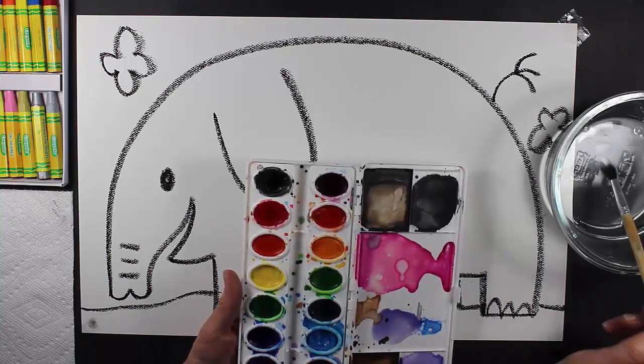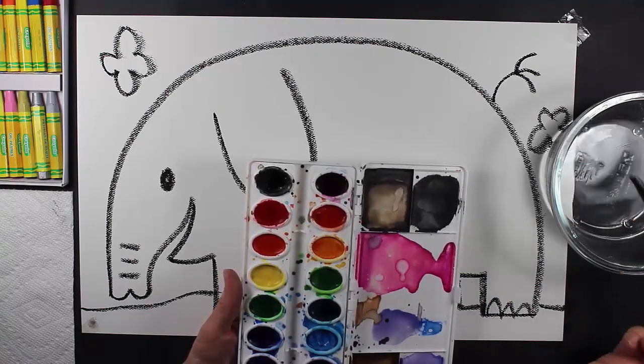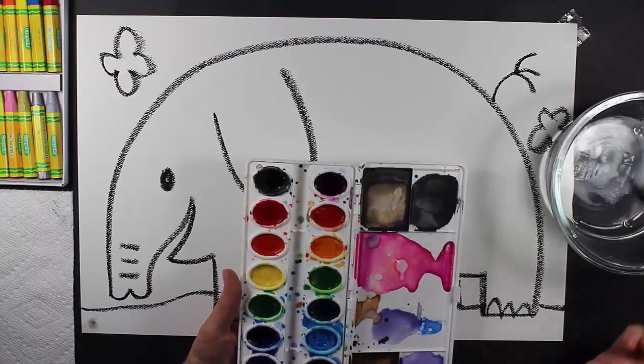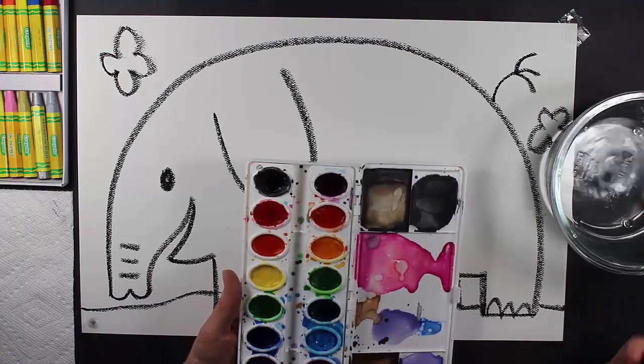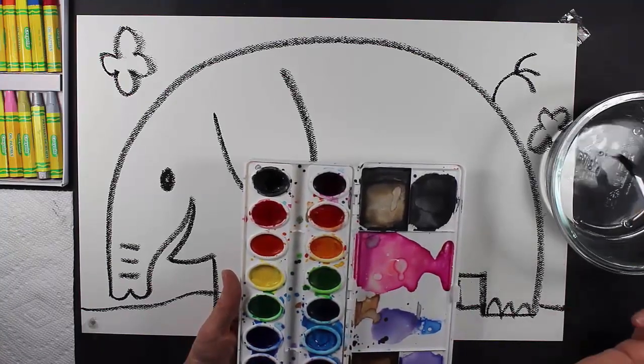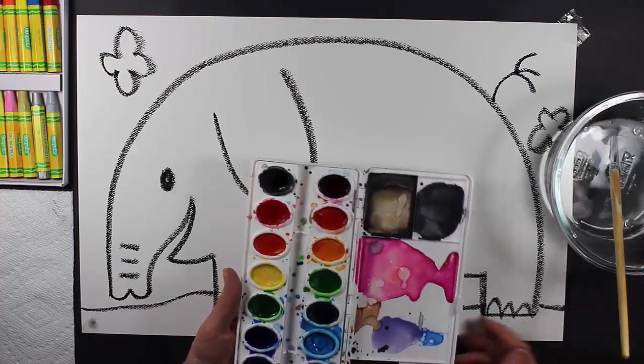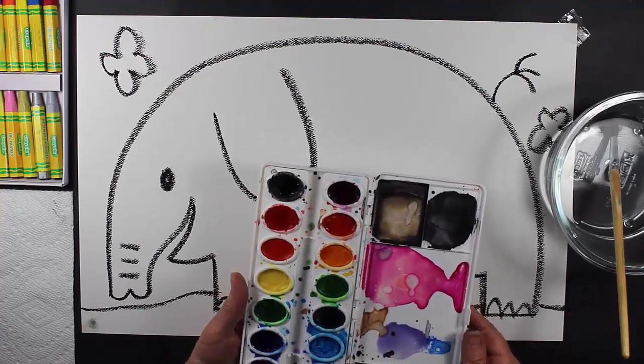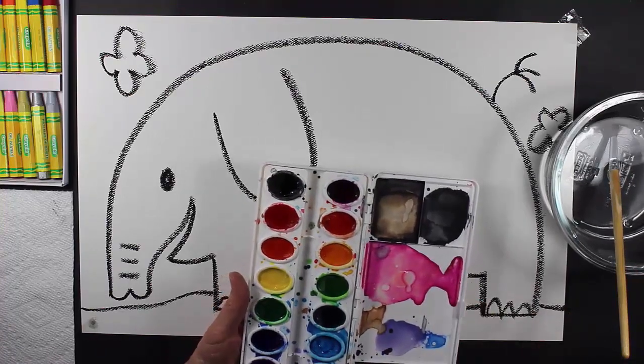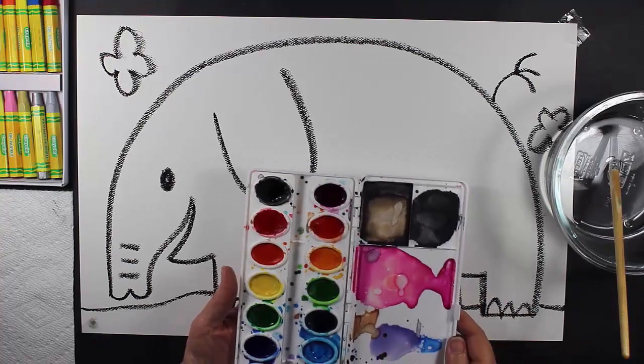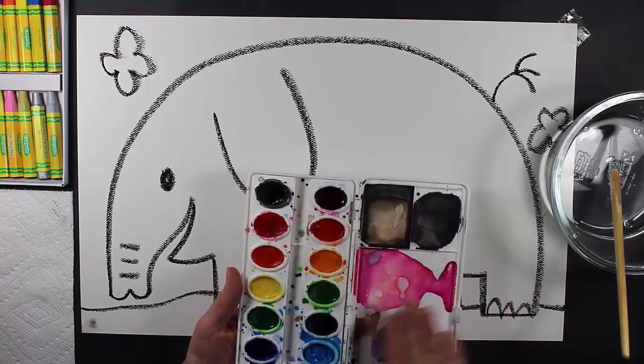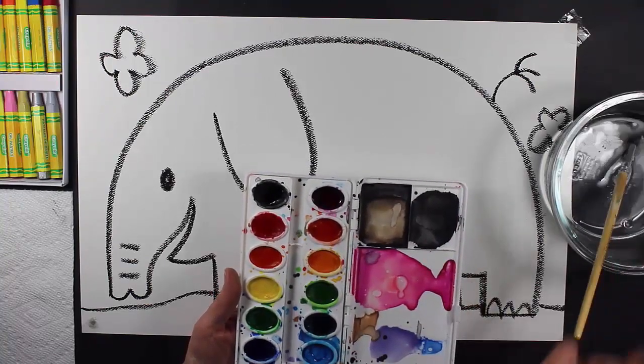I'm not quite sure what colors I'm going to use yet. I'm just going to wake up all of these paints. I know for a fact that I'm going to be using black because I'd like my elephant to be gray. So I'm going to show you how to do that if you want to make a gray elephant as well.